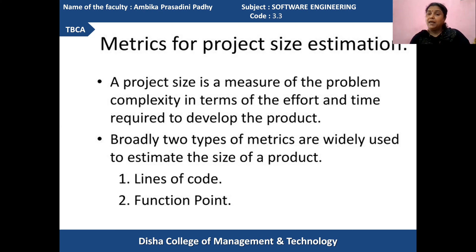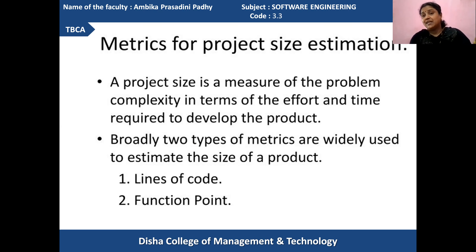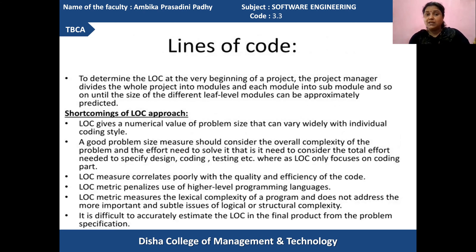So at last it is better identified rather than estimated at the beginning. So this problem can be removed in the function point metric, in which your lines of code drawbacks are suppressed. By looking at different factors like the number of inputs to be used, the number of inquiries to be used, number of outputs to be received, number of logical files to be used for the system requirement, and number of interfaces required.